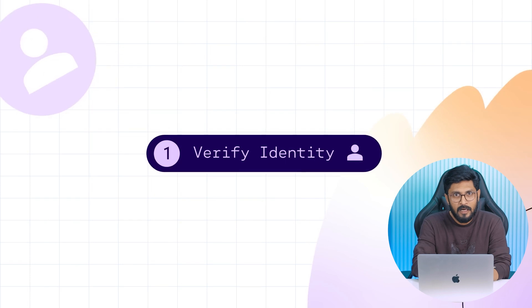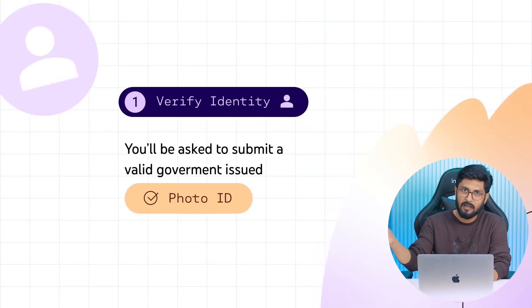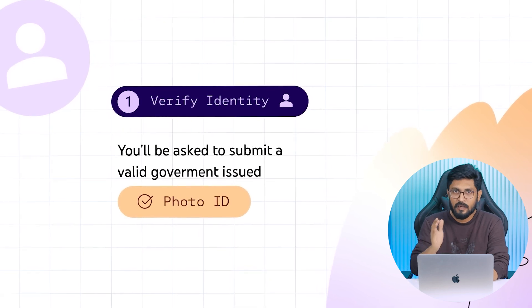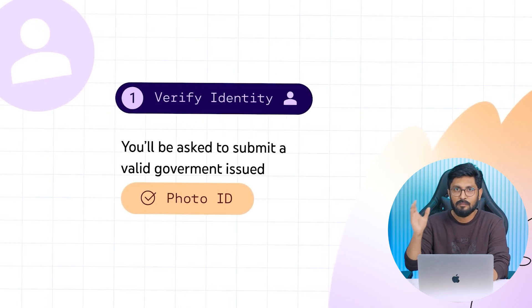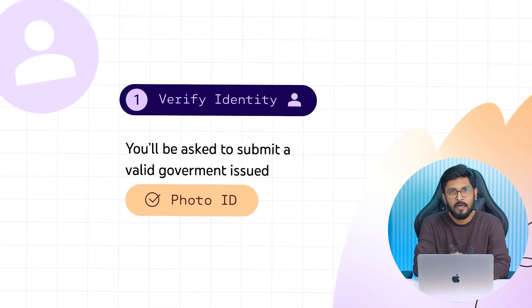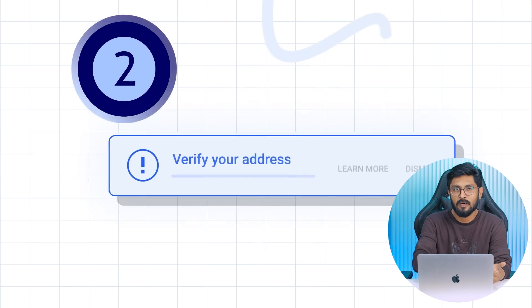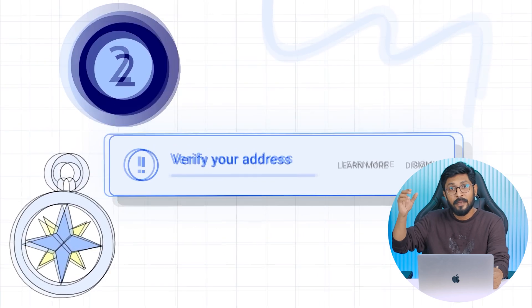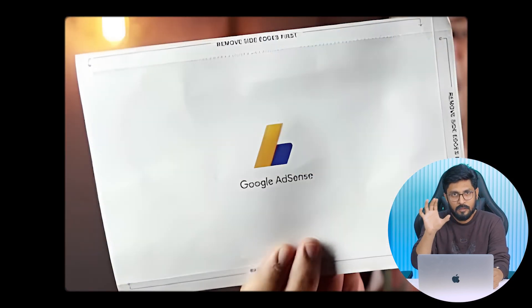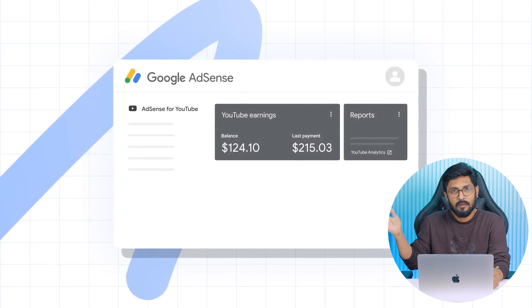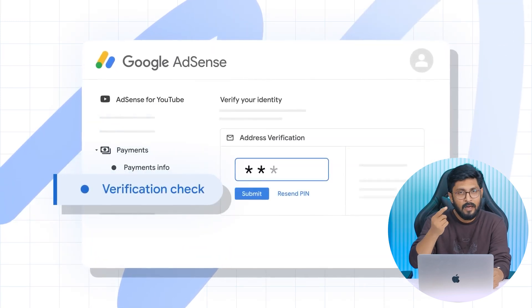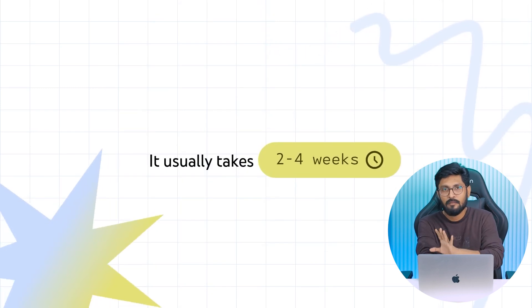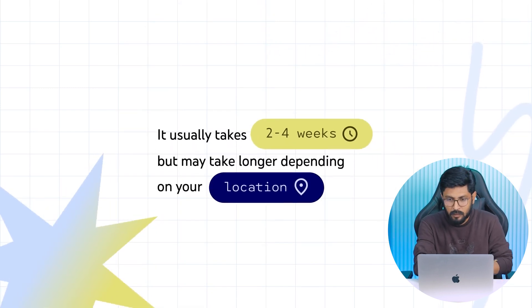Once we can verify the identity, we can then select the payment method. So if you have an identity verification document such as a passport, you can use it to verify this account. Once you have your ID verification done, you will then need to complete address verification. You can enter the address from your ID verification document.